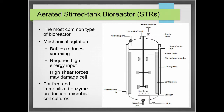This type of bioreactor is usually used for free and immobilized enzyme production, and for microbial cell cultures — typically bacteria and yeast. The requirement is that the organisms must have a cell wall to survive the shear forces in this type of bioreactor.